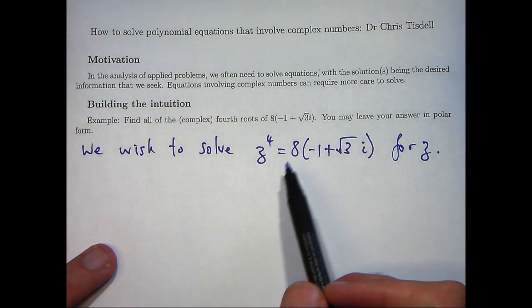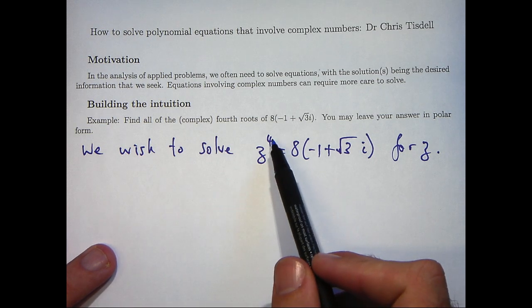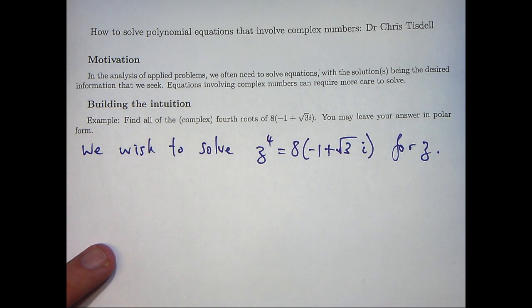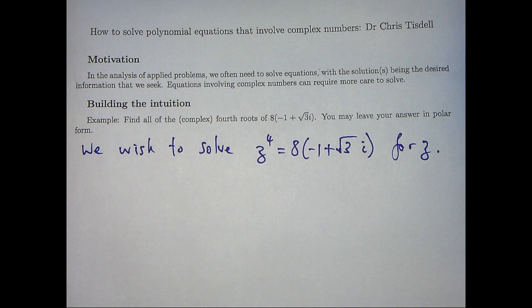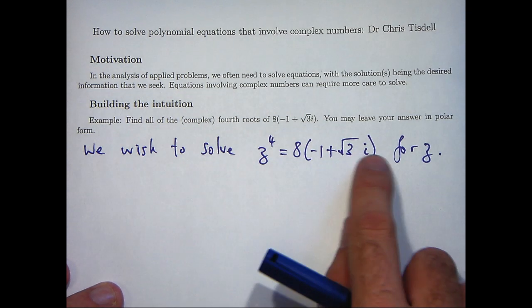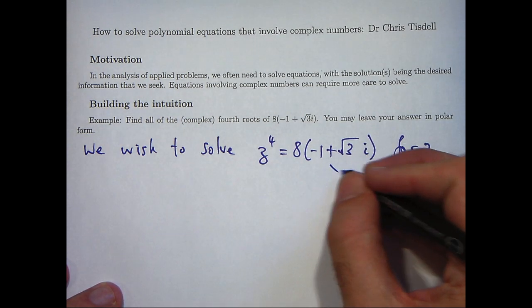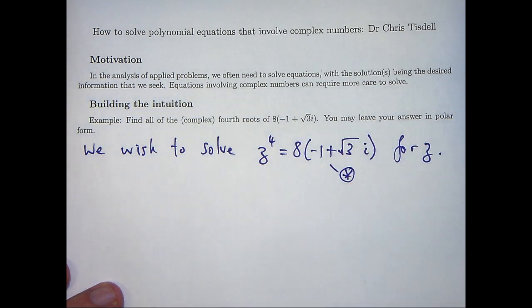And of course we want to solve this for z. Now the fundamental theorem of algebra tells us that because of this power 4 we would expect 4 solutions to this equation. So it's our task to extract those 4 solutions. I'm actually going to write the right-hand side in polar form.